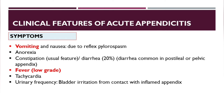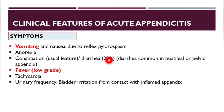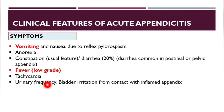Vomiting usually accompanies nausea, occurring due to reflex pylorospasm. The patient may also have anorexia, constipation (usual feature), or sometimes diarrhea in 20% of cases — more common in post-ileal or pelvic appendix. Temperature: the patient will have a low-grade fever and tachycardia. Urinary frequency occurs because of bladder irritation from contact with the inflamed appendix.